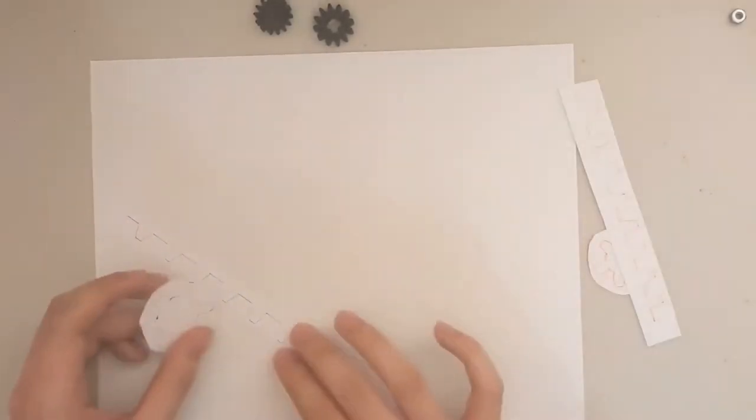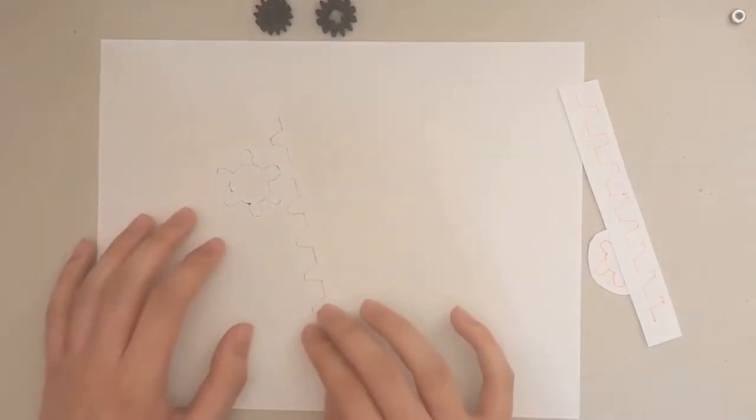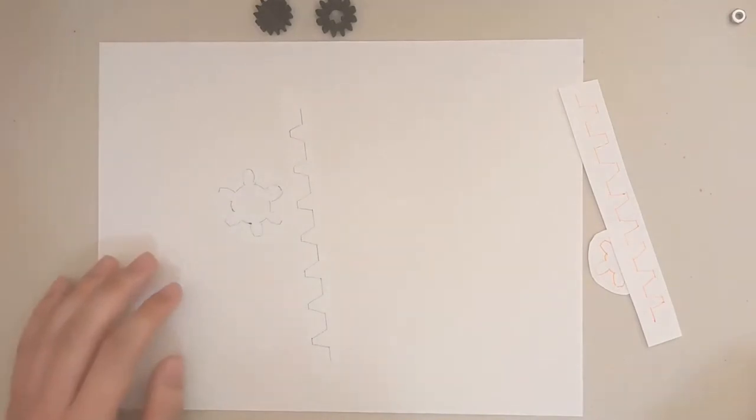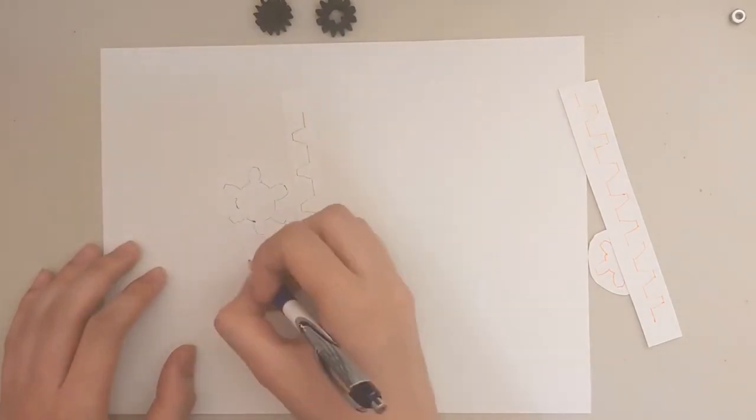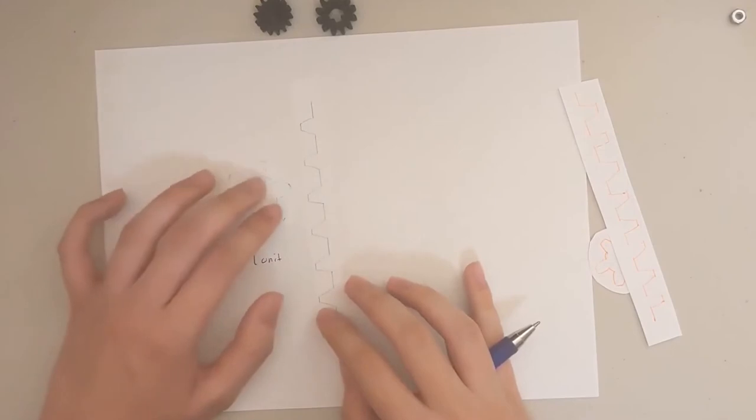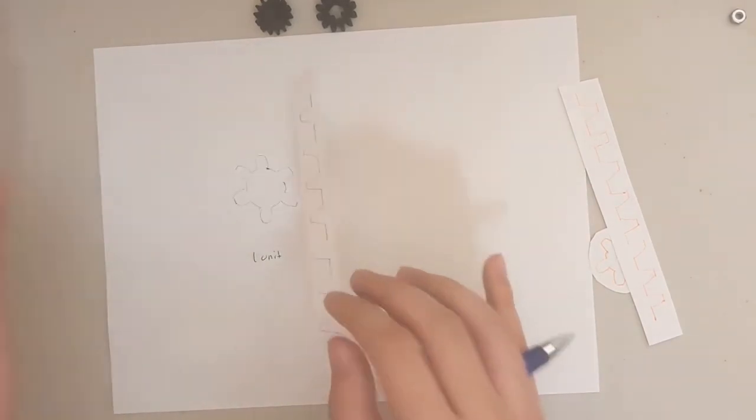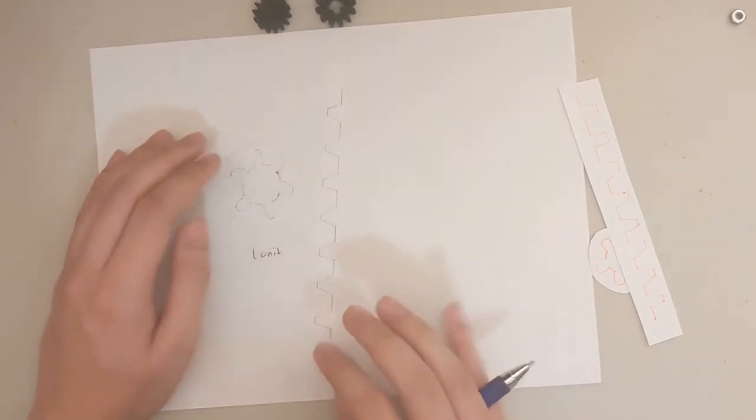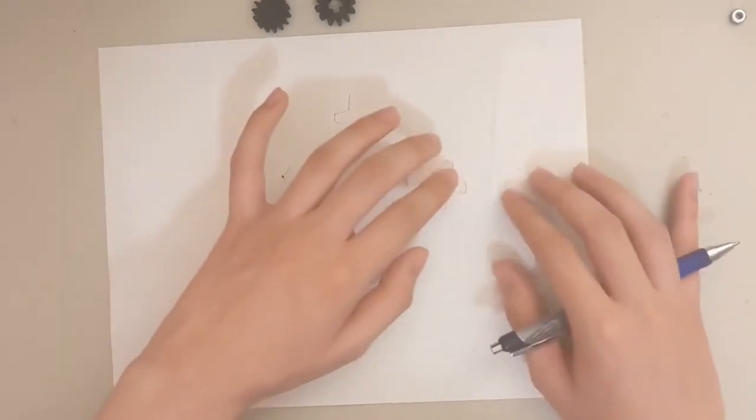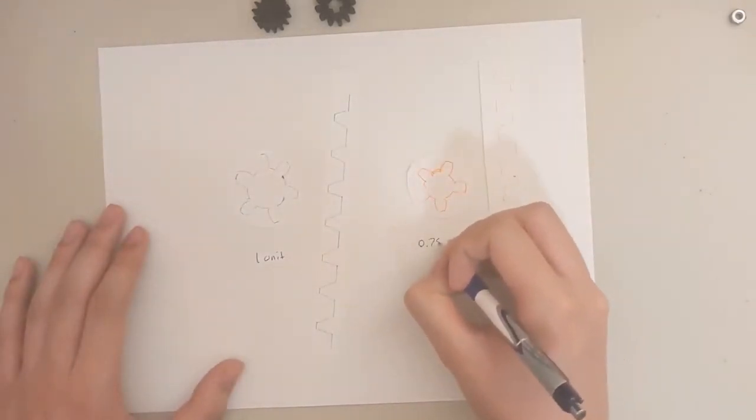I'm going to try to explain the theory and math behind the gearbox. First thing I want to do is think about a rack and pinion gear set. So let's say this pinion gear has a circumference of one unit. What does that mean? That means for every one rotation, this rack will move down one unit - move down or move up one unit. And let's say this pinion has a 0.75 unit circumference.